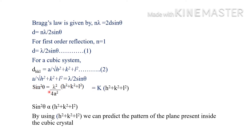So sin² theta = K × (h² + k² + l²), where h, k, and l are the Miller indices of a plane. Therefore sin² theta is proportional to h² + k² + l², and using this we can predict the diffraction pattern of planes present inside a cubic crystal.